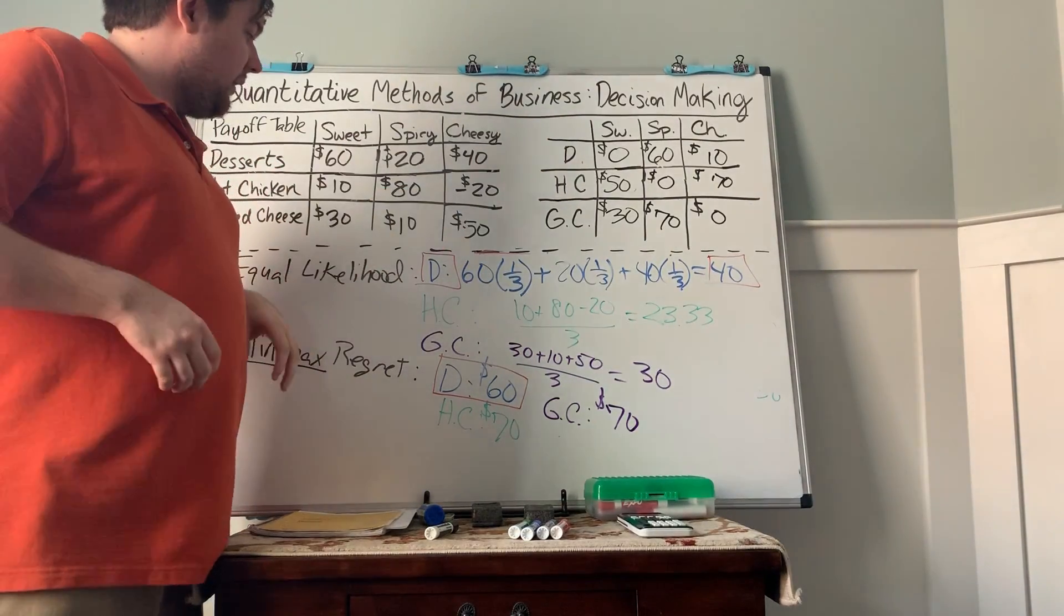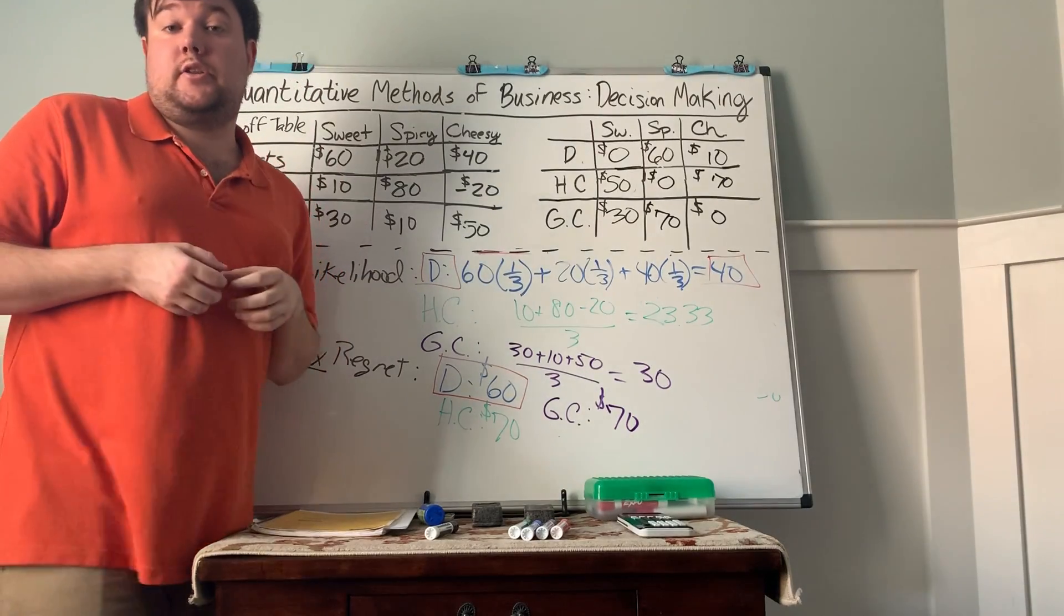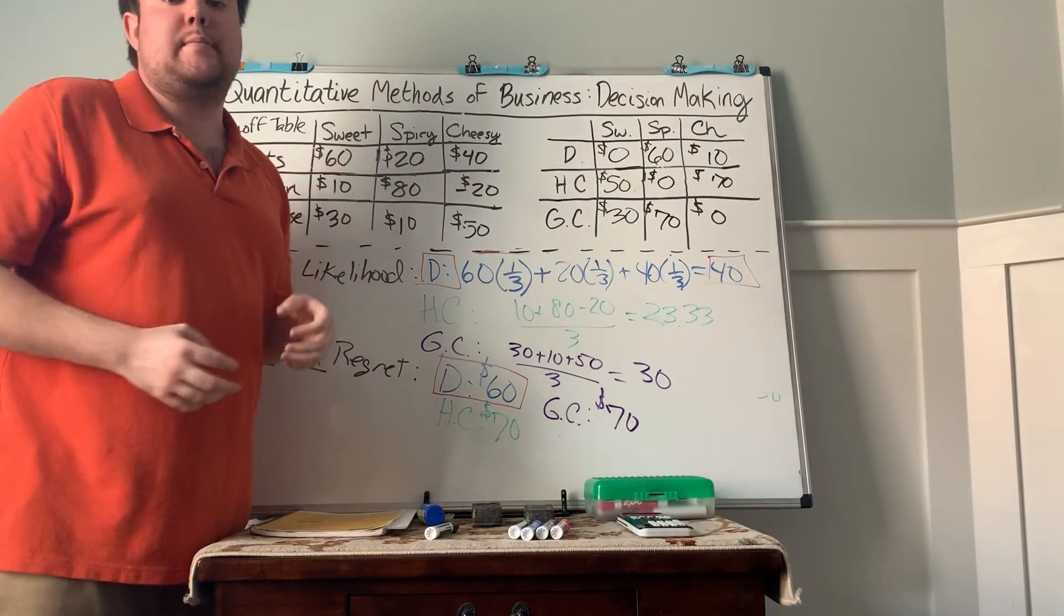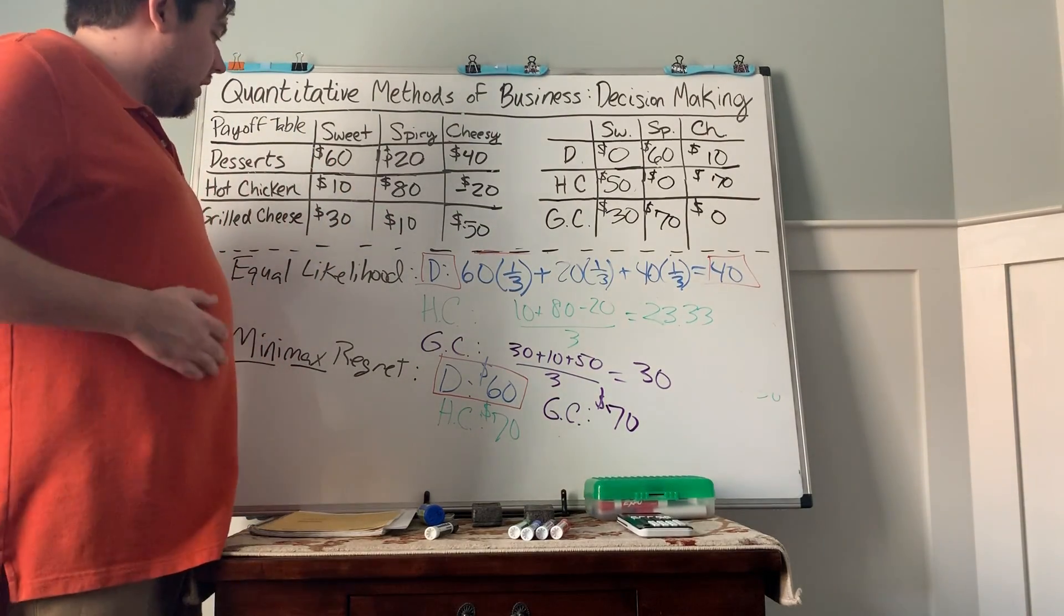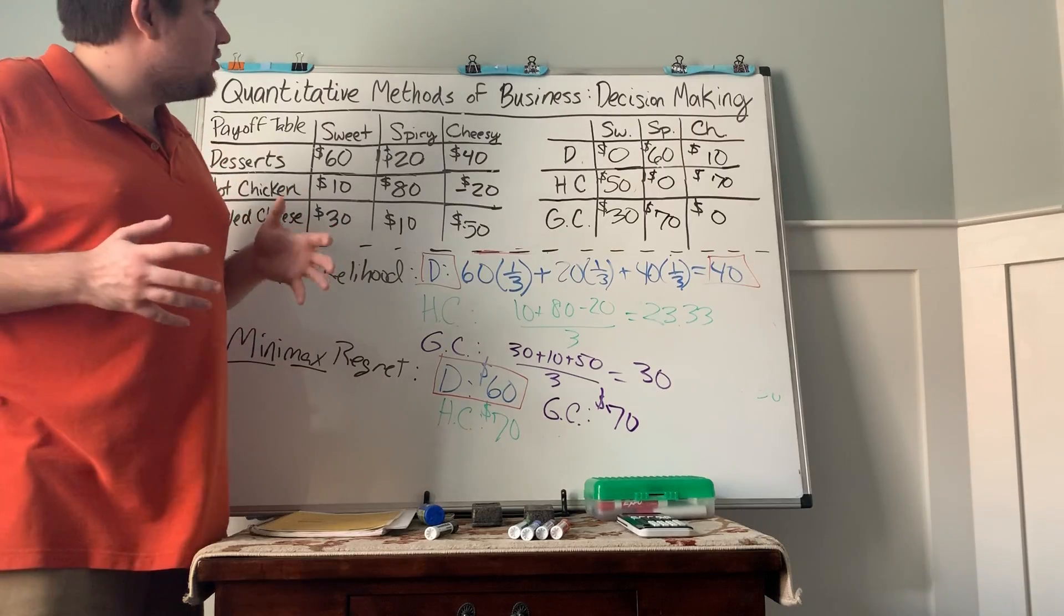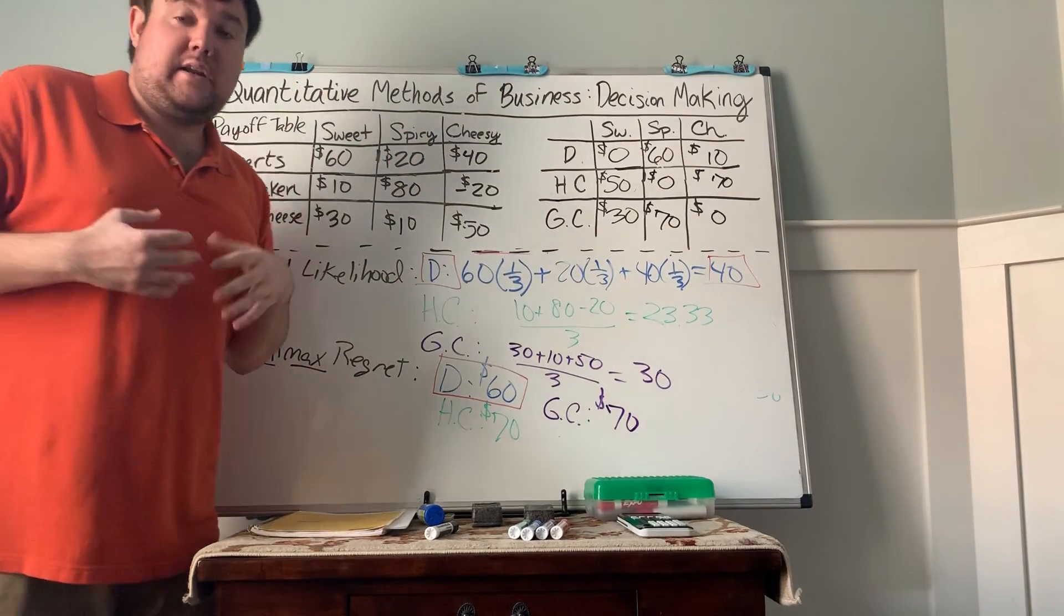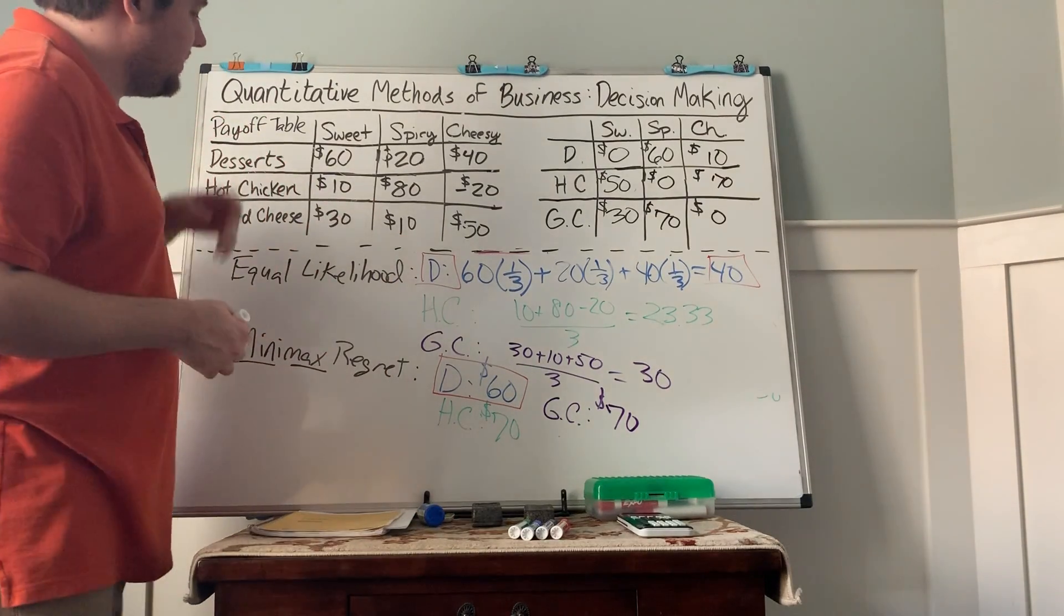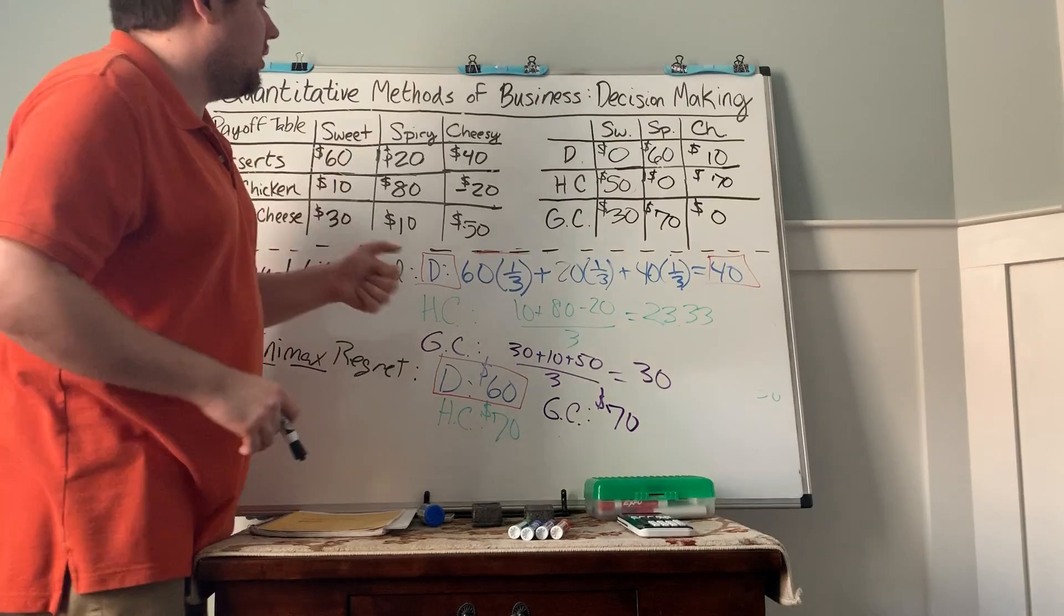And so, notice desserts, I think won three and hot chicken won two. That doesn't necessarily mean desserts is the one to go with. It's still under the company's jurisdiction to say which of these criterion do they trust the most. Or maybe they just want to make a hot chicken restaurant. So really, it's personal preference on do you go for desserts? Do you go for hot chicken? If your goal is profit, you're probably not going the grilled cheese. But again, that's company preference.